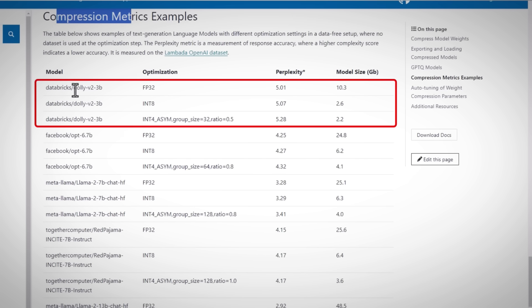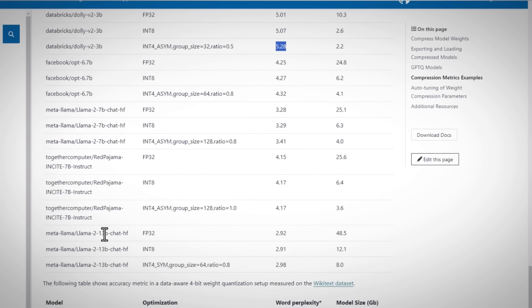For example, you can see the Dolly 3 billion model going from 10 GB in floating point 32 to less than 3 GB in int8 and to almost 2 GB at int4. And the perplexity, let's call it the model confidence in generating the next word, is hardly changed.